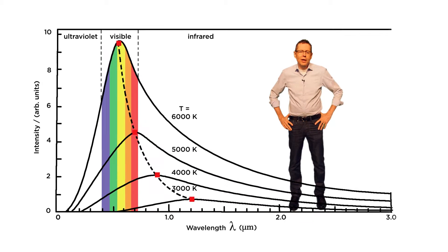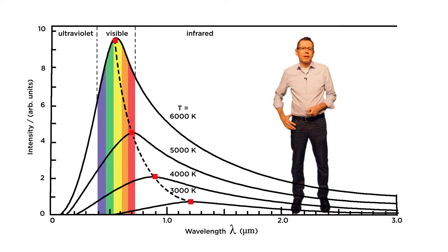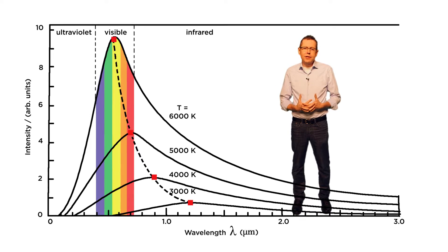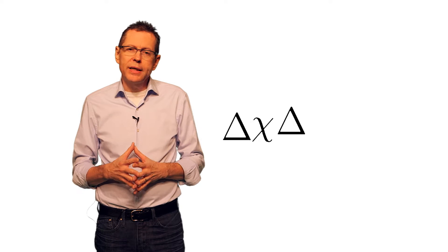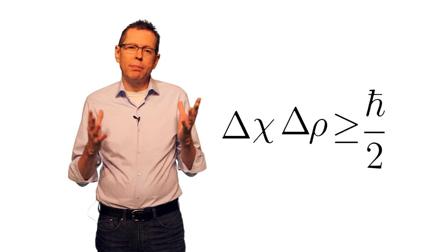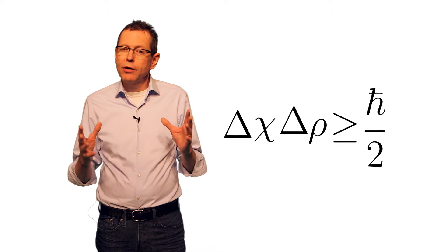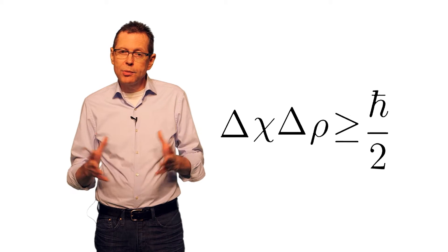Before we go there, what do we know about quantum so far? We know that energy comes in discontinuous packets of waves and particles called quanta. We know that this wave-particle duality makes it impossible to measure position and momentum simultaneously without changing both, giving rise to the uncertainty principle.